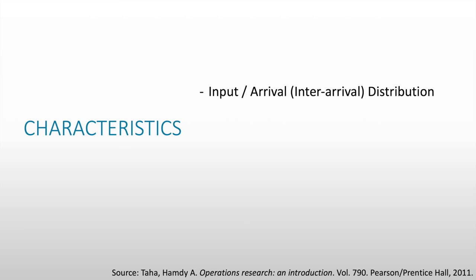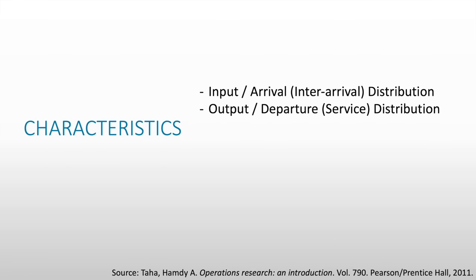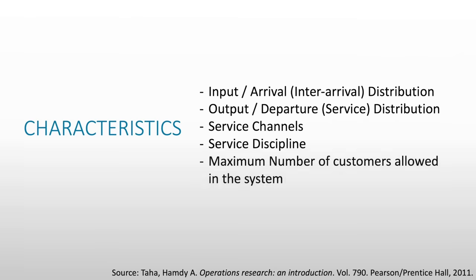So what are the characteristics of a queue? There are six characteristics, and we will go through each one as we go through the different examples. One would be input or the arrival or inter-arrival distribution. Then we have output or the departure, service distribution. We have service channels. We have service discipline. The maximum number of customers allowed in the system. And lastly, the calling source.